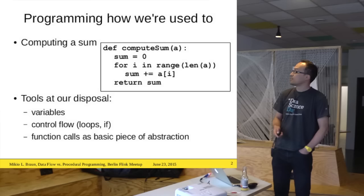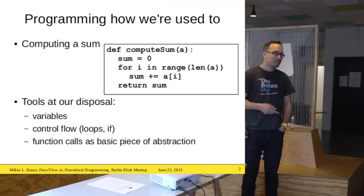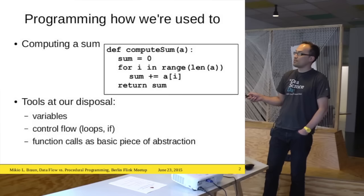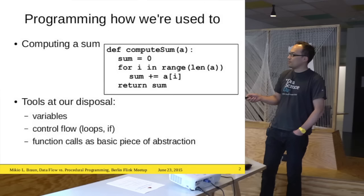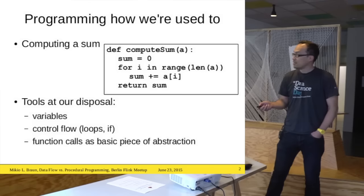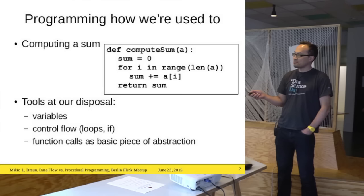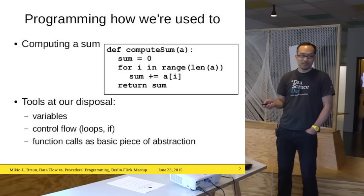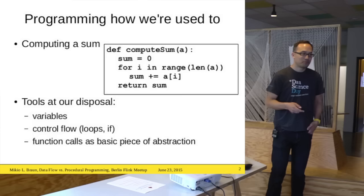This is how you are more or less used to program in a normal procedural style. A very simple example: computing a sum. You have a variable which is set to zero, then you go through all your elements, sum them up, and return the sum. So natural that most of you probably aren't aware of what the building blocks actually are: variables, control flow like loops and ifs, and function calls as a basic piece of abstraction.